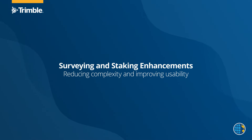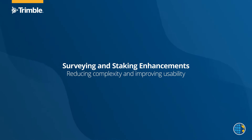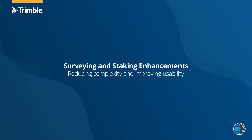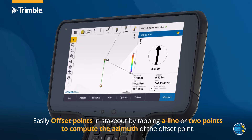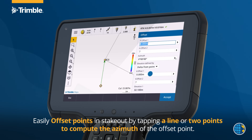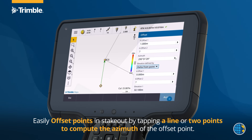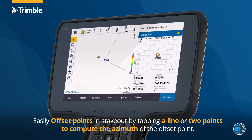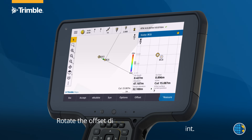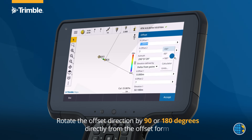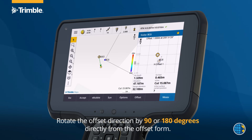Surveying and staking enhancements, reducing complexity and improving usability. Easily offset points in stakeout by tapping a line or two points to compute the azimuth of the offset point. Rotate the offset direction by 90 or 180 degrees directly from the offset form.